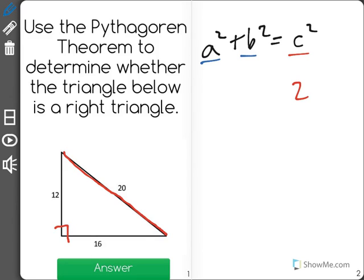So in this case our hypotenuse would be 20. So I need to check to see if my side lengths are 12 and 16, if 12 squared plus 16 squared equals 20 squared.